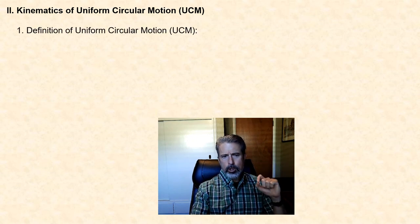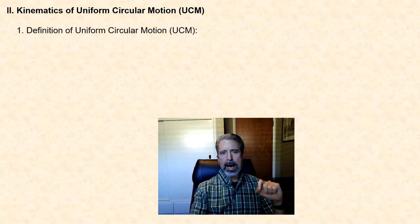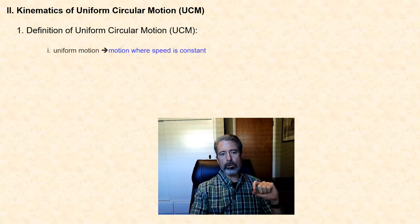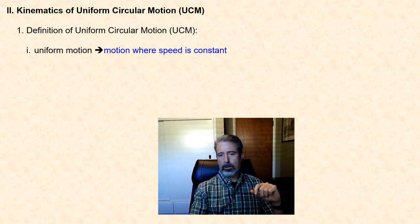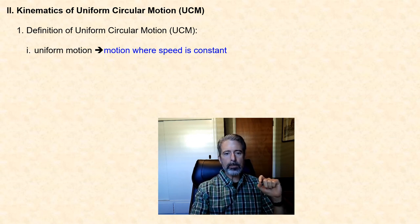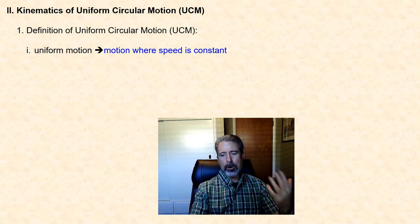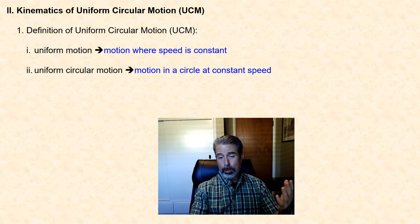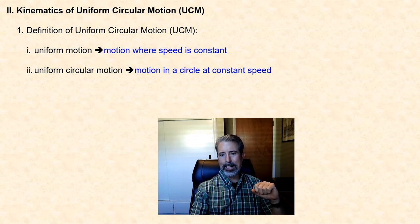Let's start our discussion of the kinematics of uniform circular motion by defining exactly what we mean by UCM. In our discussion of kinematics, we talked about uniform motion — that is, motion where the speed of the object is constant. So it should be no stretch of the imagination that when we talk about uniform circular motion, we're simply talking about motion in a circle at a constant speed.